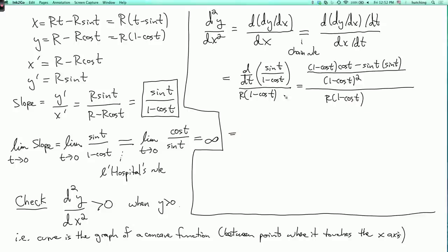So, on the very top here, I have cos t minus cos square t minus sin square t, and then everything else, I'm dividing by r times 1 minus cos t cubed.